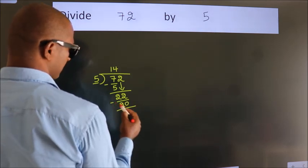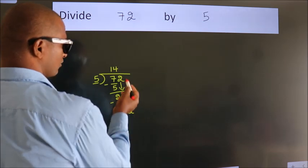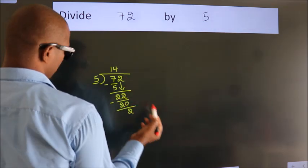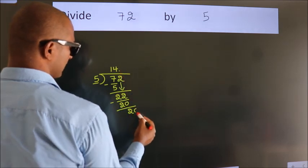Now, we subtract. We get 2. After this, no more numbers to bring down. So, what we do is, we put a dot and take 0.